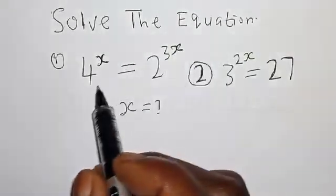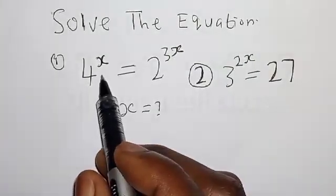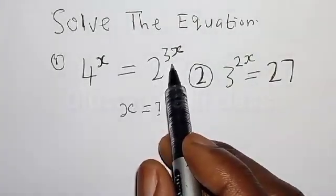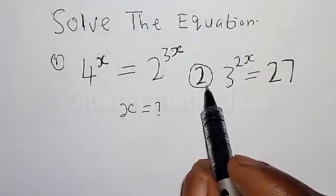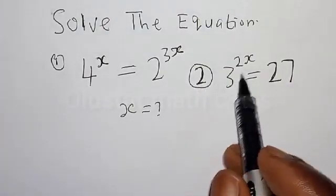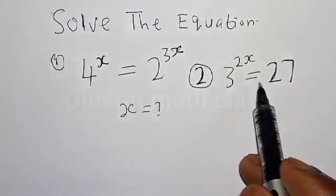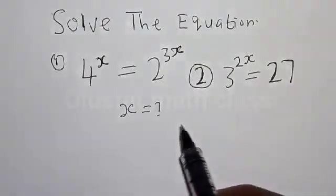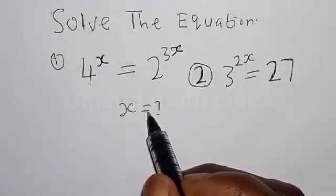Solve the equation. Number 1: 4 raised to power s is equal to 2 raised to power 3x. Number 2: 3 raised to power 2s is equal to 27. What is the value of s?